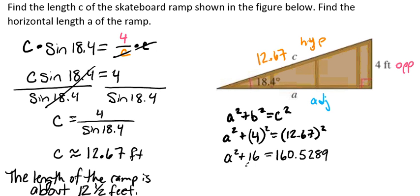Then we're going to go ahead and subtract that 16 from both sides. And that's going to give us a squared is going to be 144.5289.